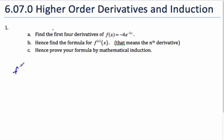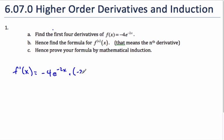I'm going to find the first derivative. The derivative of e to the negative 2x is just e to the negative 2x. The chain rule says take the derivative of the inside function, which is negative 2. So I get 8e to the negative 2x.